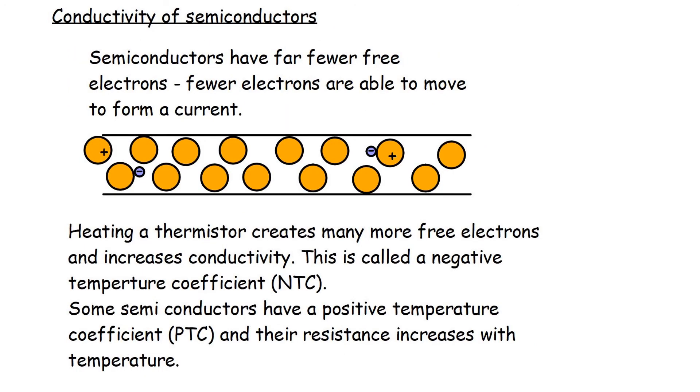Conductivity of semiconductors: semiconductors have far fewer free electrons, fewer electrons are able to move to form a current, represented in the diagram shown here. Heating a thermistor creates many more free electrons and increases conductivity. This type of thermistor is called a negative temperature coefficient NTC thermistor. Some semiconductors have a positive temperature coefficient and their resistance increases with temperature.